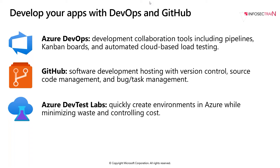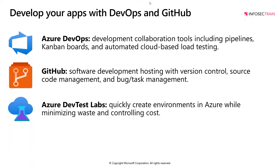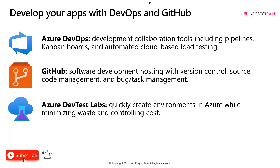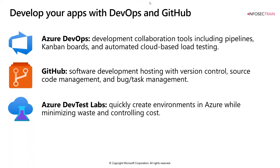Azure Boards supports the agile development model, helping with project management through Kanban boards, reporting, tracking ideas, and working through different types of items and issues. Azure Pipelines provides CI/CD — Continuous Integration and Continuous Delivery — pipeline automation. There is also Azure Artifacts and Azure Test Plans to help with load testing. Additionally, Azure DevOps integrates with GitHub so you can use your existing GitHub repositories directly.